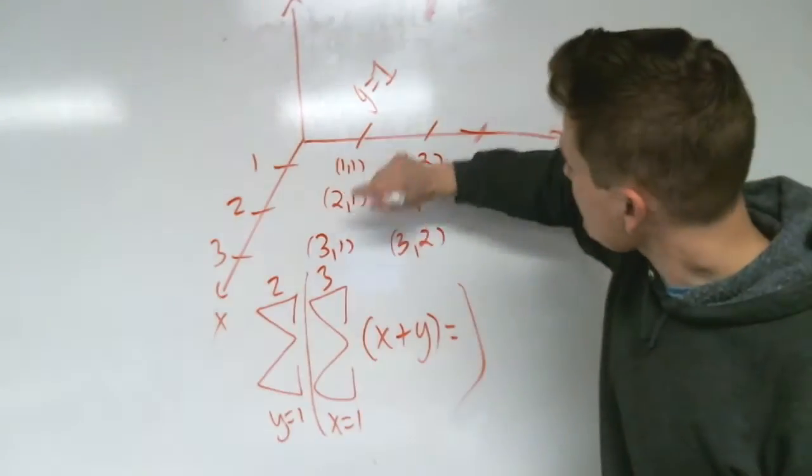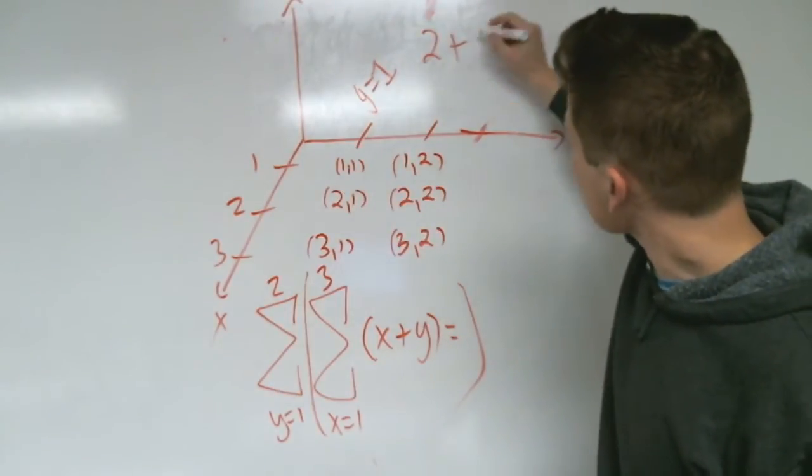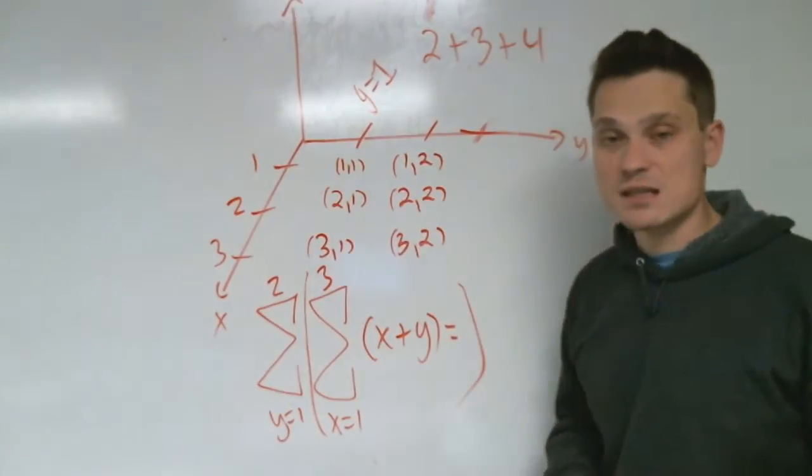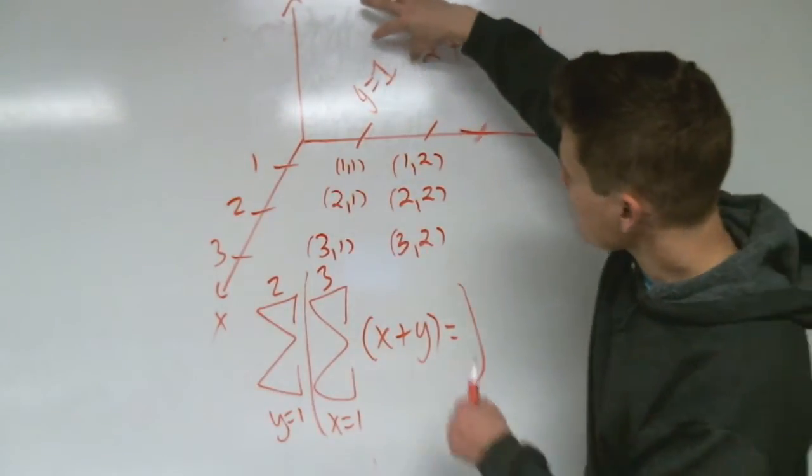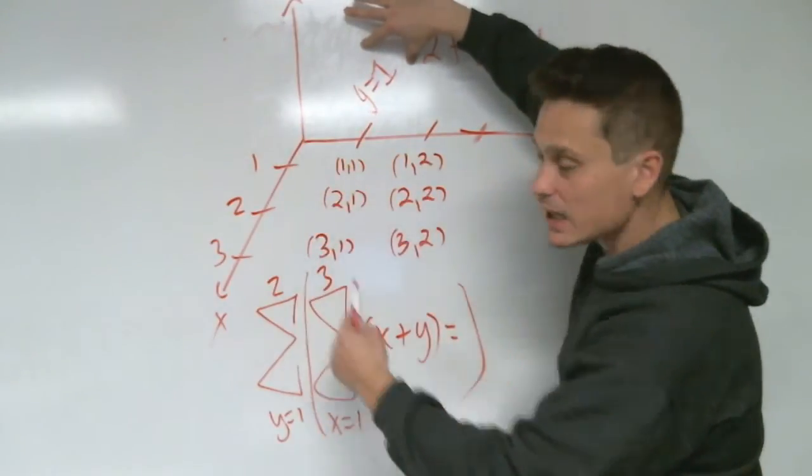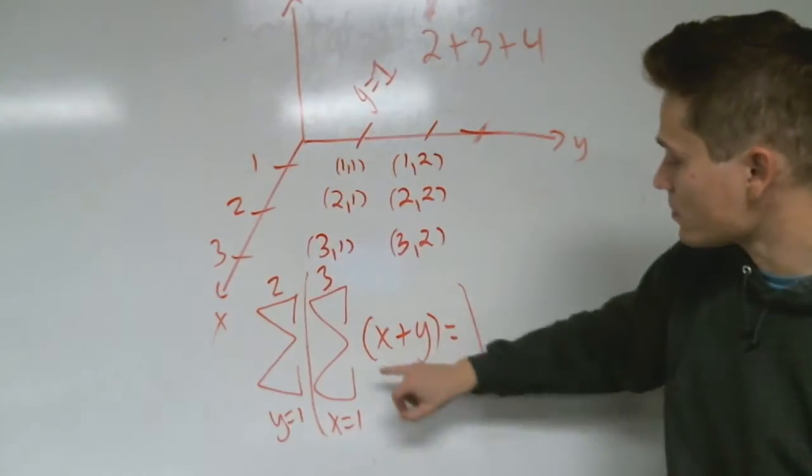So the first value here is 2, then 2 we add 3, then 2 we add 3 plus 1 which is 4. So that's the first sum. I fixed y at 1 and I went down across this row like this and I added up the values according to this rule.